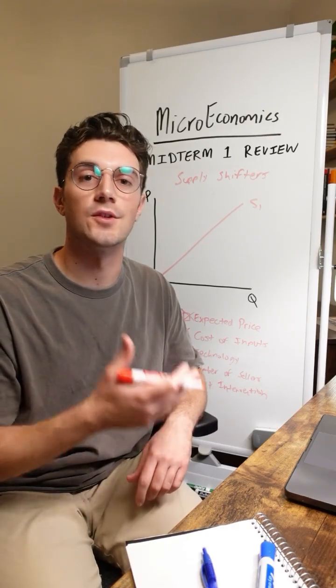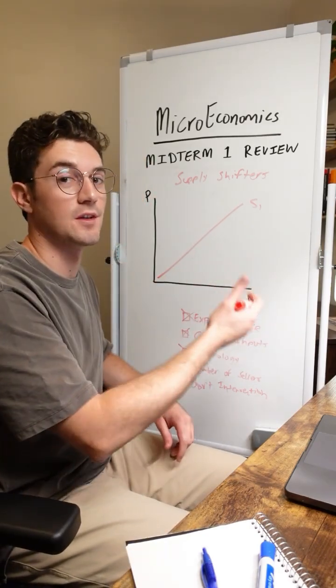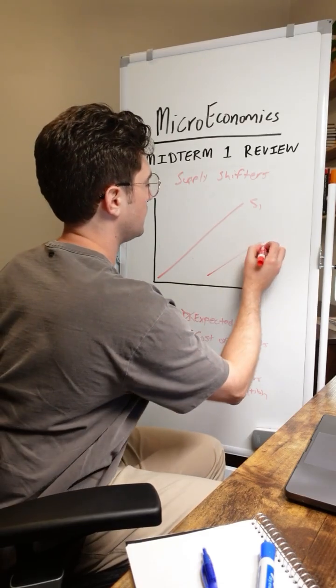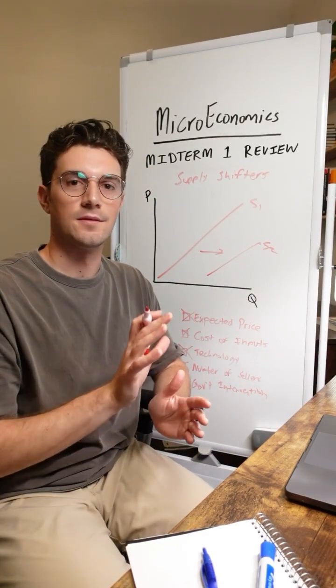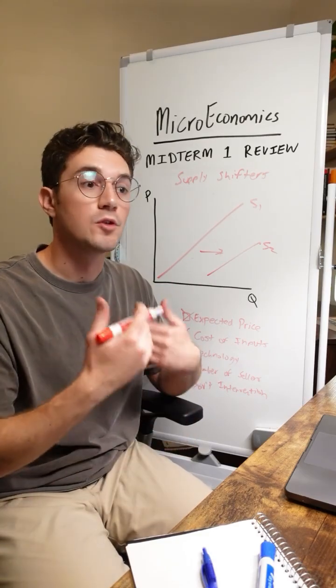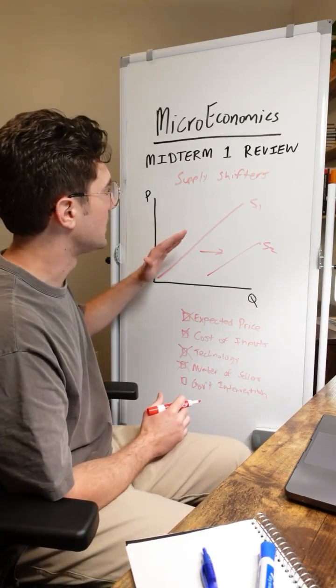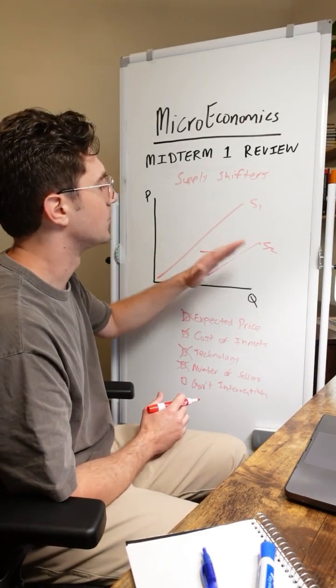All right, the inverse of taxes are subsidies. If the government increases their subsidies on producers, well that's going to increase supply of the good. Because essentially what this means is that the government is funneling money to producers to encourage them to output more units of the good. The government increasing their subsidies will shift supply to the right.